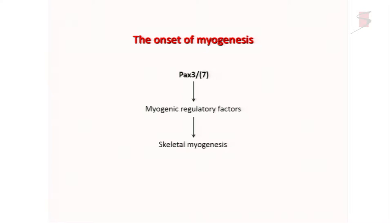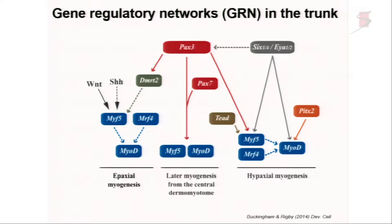The simple cascade involves Pax3 at the top, activation of the myogenic regulatory factors of the MyoD family, and then skeletal myogenesis. Of course the network is much more complicated than that. Here's an example of the network that works in the trunk, but the important point is that Pax3 is at the top, and to make skeletal muscle you have to activate members of the MyoD family — MyoD or Myf5. Other genes also intervene, as indicated, and signaling pathways too.